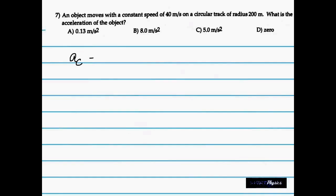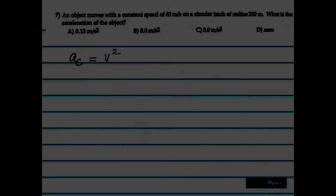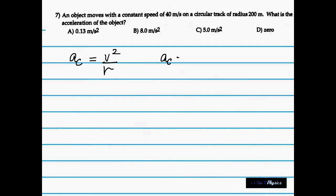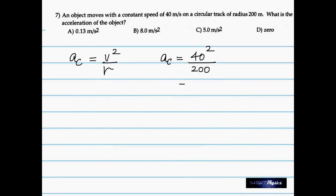Okay, the seventh question talks about an object moving at a constant speed of 40 m per second. And the radius is given. What is the acceleration? Remember there is another formula for centripetal acceleration: V²/r. Straightforward. Direct substitution. 40² by 200 gives 8 m per second squared. How tough can that be?